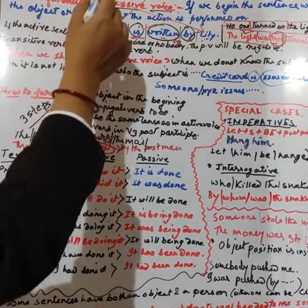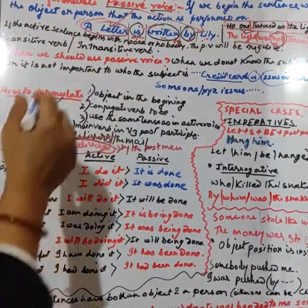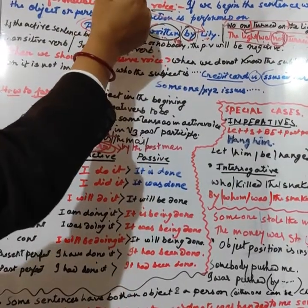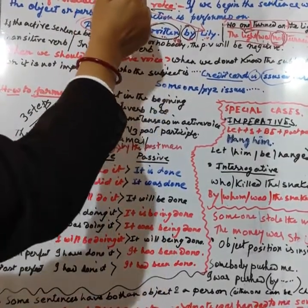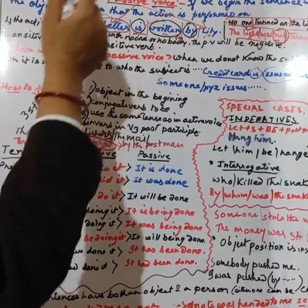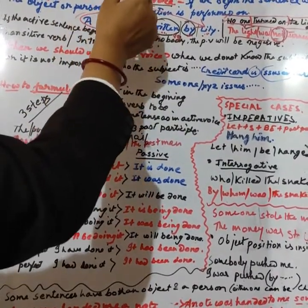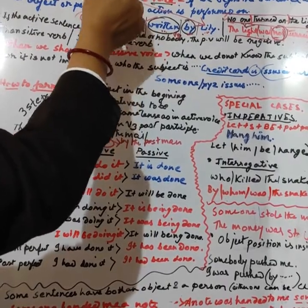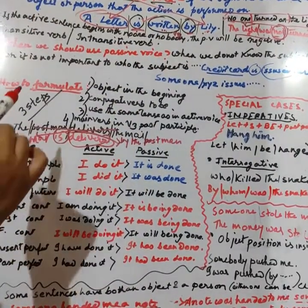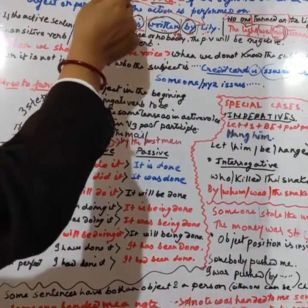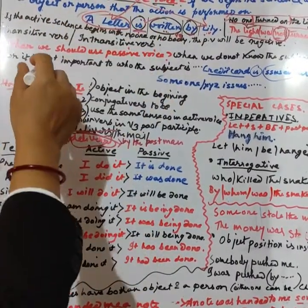Here we can see the example: 'Lily writes a letter.' The verb 'writes' is in simple present tense. You need to notice which tense the sentence belongs to, because on that basis we will formulate the passive voice.